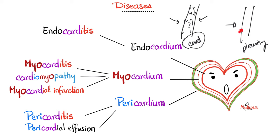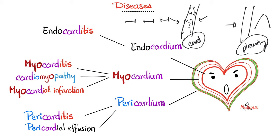There is another difference. The pleural friction rub is usually biphasic — inspiration and expiration. But the pericardial friction rub is triphasic: systolic, early diastolic, and late diastolic. The late diastolic component is caused by the contraction of the atrium. So the pericardial friction rub is triphasic with every cardiac cycle, while the pleurisy friction rub is just biphasic. I have a separate video in this playlist titled 'Friction Rub.'